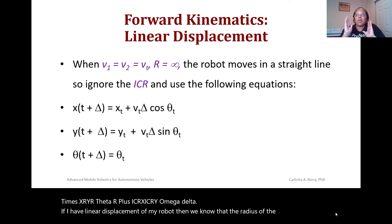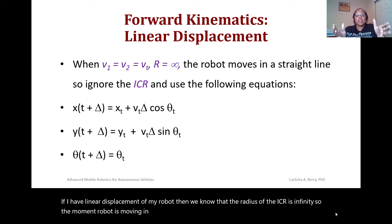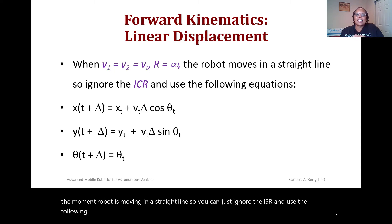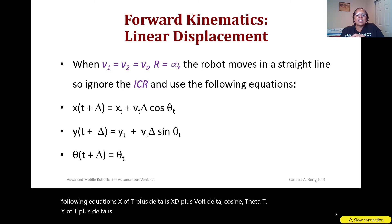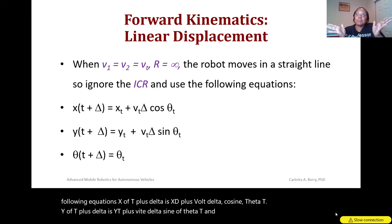If the robot has linear displacement, the radius of the ICR is infinity, so the robot is moving in a straight line and you can ignore the ICR. The equations become: x(t+Δ) = x(t) + v(t)·Δ·cos(θ(t)), y(t+Δ) = y(t) + v(t)·Δ·sin(θ(t)), and θ(t+Δ) = θ(t), which makes sense because the robot is moving straight.